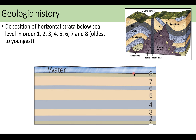Let's go through this diagram step by step — it's the same one from the previous slide. This location started with horizontal strata that was below sea level. Here we have the oldest layer, number one, and the youngest layer, number eight. They were deposited in order from one to eight. But the final diagram is a lot messier, so let's figure out what happened and in what order.